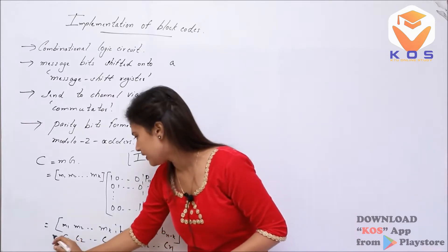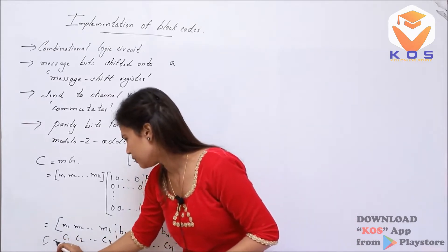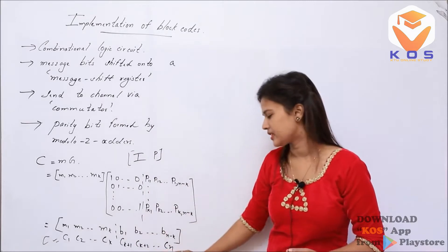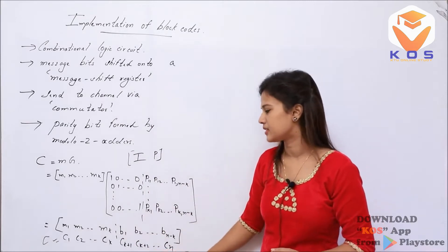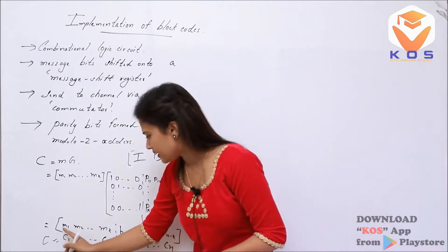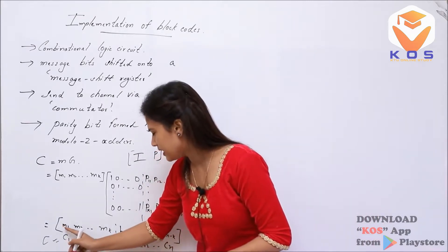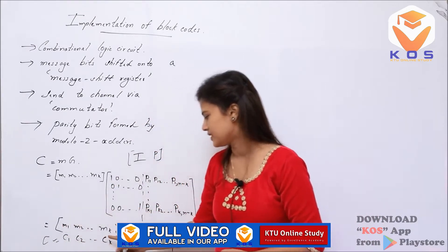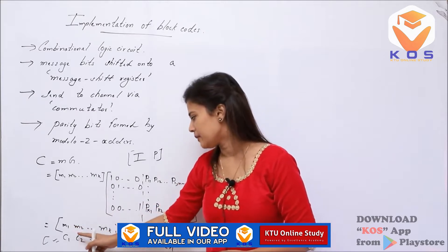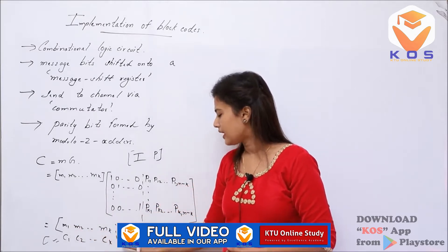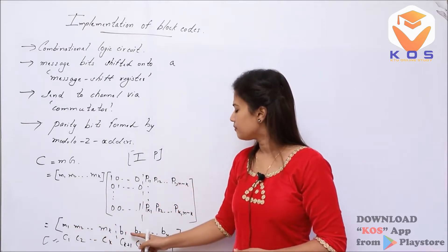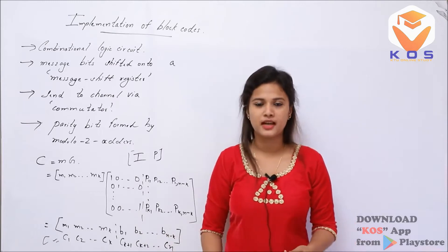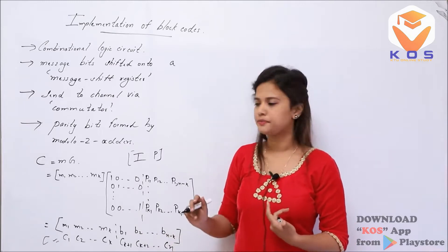The code word here is called C1, C2, C4, Cn. In the first section, we have M1, M2, Mk. It will be B1, B2, B(n-k).